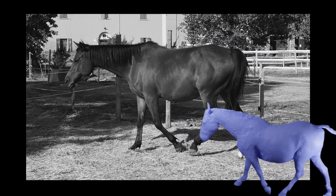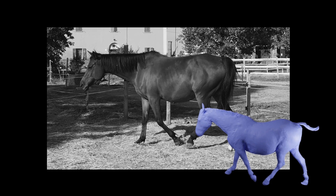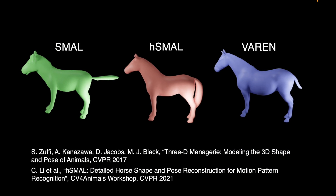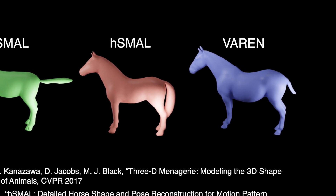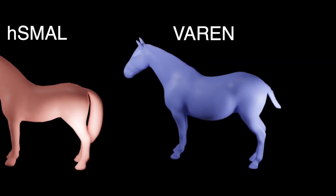Our goal is to create a model that can support the development of model-based solutions for in-the-wild 3D shape and motion analysis. Compared with previous 3D parametric horse models, SMAL and HSMAL, Varen has a much higher quality, with more natural proportions and body surface details.